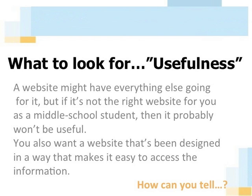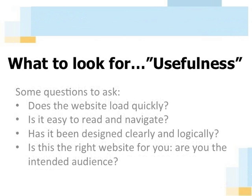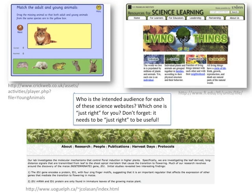You also want a website that's been designed in a way that makes it easy to access the information. And speaking of being able to access the information, you want a website that loads quickly and regularly. We already know that those 404 not found messages are frustrating, and so are pages which load slowly. You don't want your valuable research time wasted. So here are some questions. Does the website load quickly? Is it easy to read and navigate? Has it been designed clearly and logically? And is this the right website for you? Are you the intended audience? In this example, who is the intended audience for each of these science websites? Which one is just right for you? Don't forget, it needs to be just right to be useful.